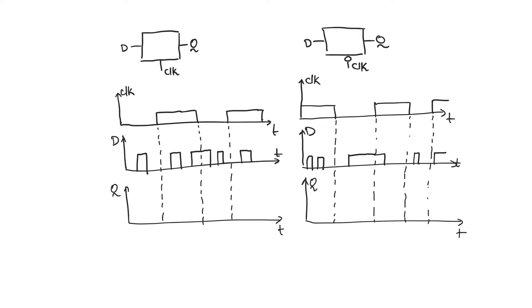In transparent mode the output Q is exactly the same as the input D, and in opaque mode the latch will keep the last value of D that it saw on the active phase of the clock. Therefore it will be in memory mode.